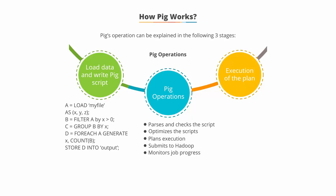Pig then monitors the status of jobs using the Hadoop API and reports the status to its client. In the execution stage, the results are dumped on the screen or are stored in HDFS depending on the user command.